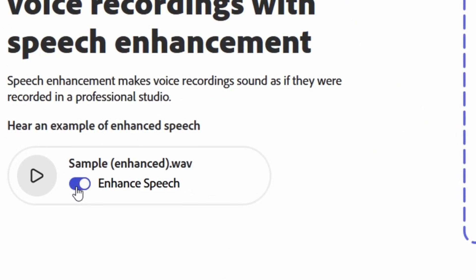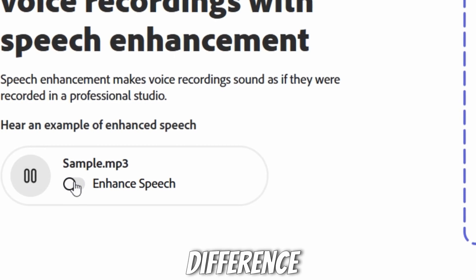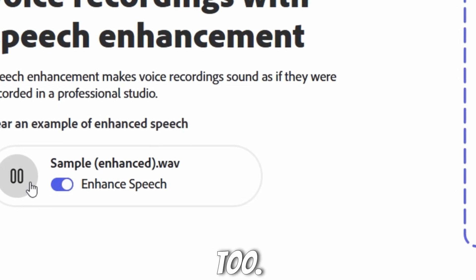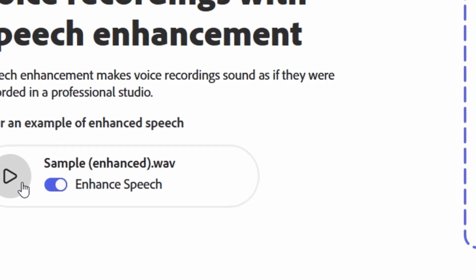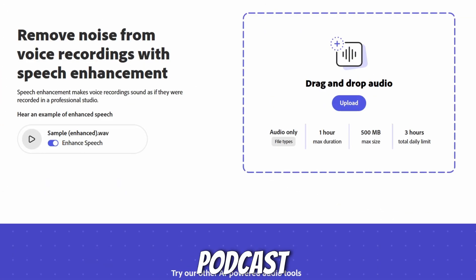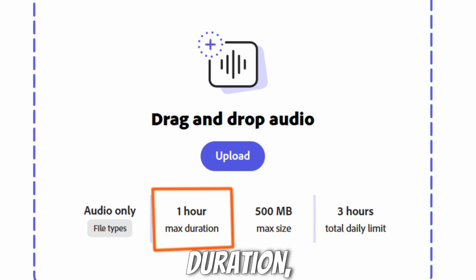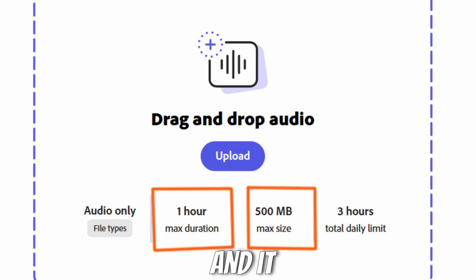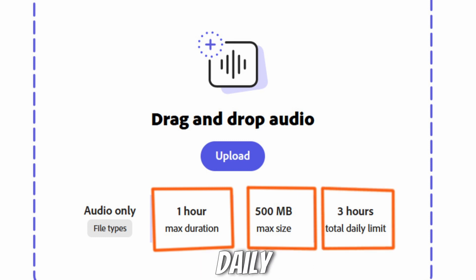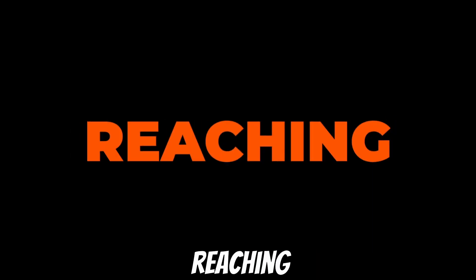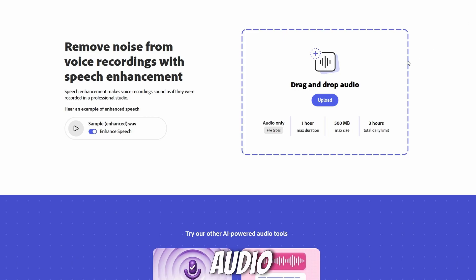Here you can see the sample audio — by toggling the button on and off you can see the difference between before and after the enhancement. Currently, Adobe Podcast allows audio with a one-hour max duration, 500 MB max size, and gives you a three-hour total daily limit to enhance your audio, which is quite generous.